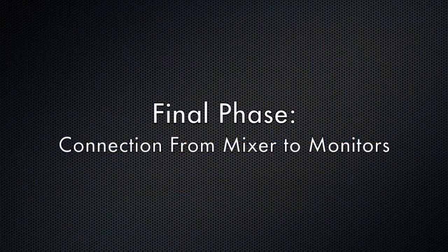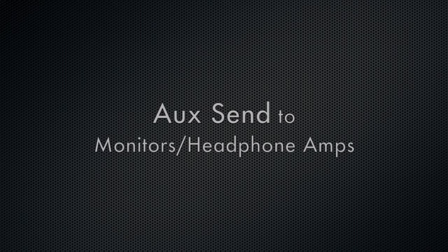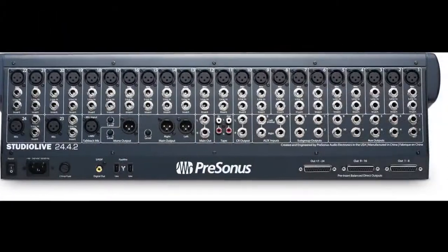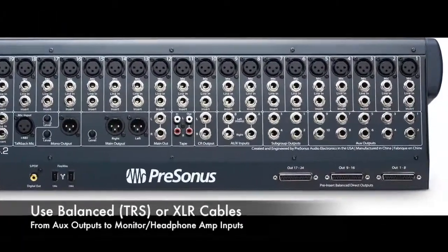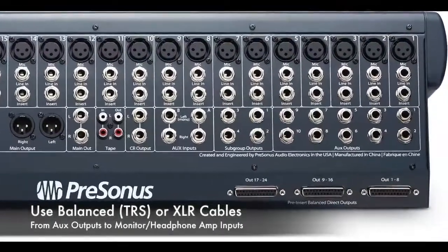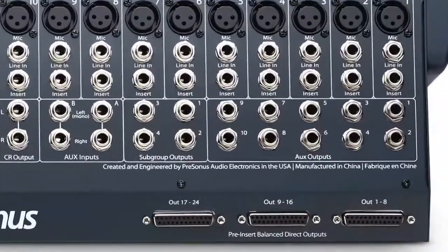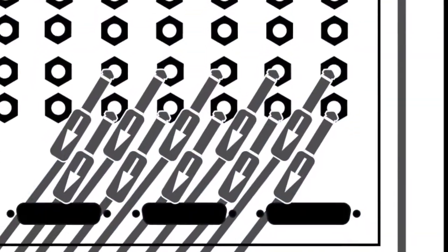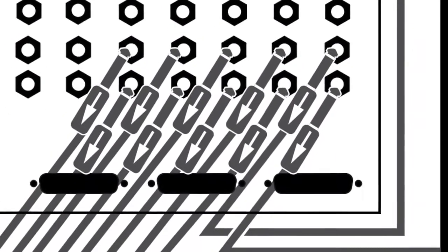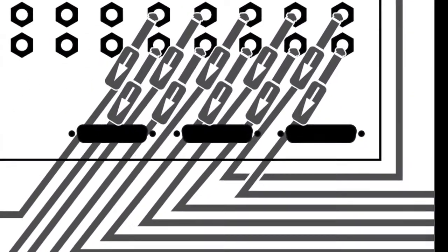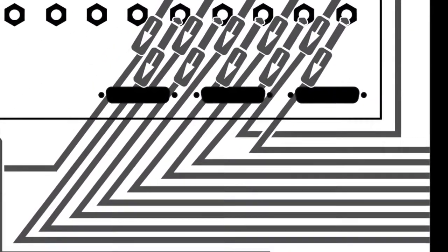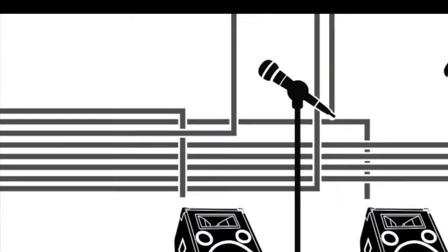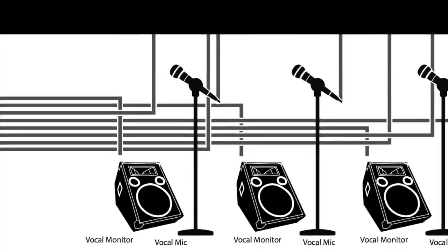Now to get your aux sends to the monitors or headphones, you need to connect the aux send outputs to the monitor or headphone amps. You do that from the aux balanced or TRS outputs from the back of the mixer. Best practice is to connect either a balanced line quarter-inch cable or an XLR cable from the aux send output to a balanced line input on the monitor or headphone amp, the output of which is then connected to the input of each monitor or headphone.